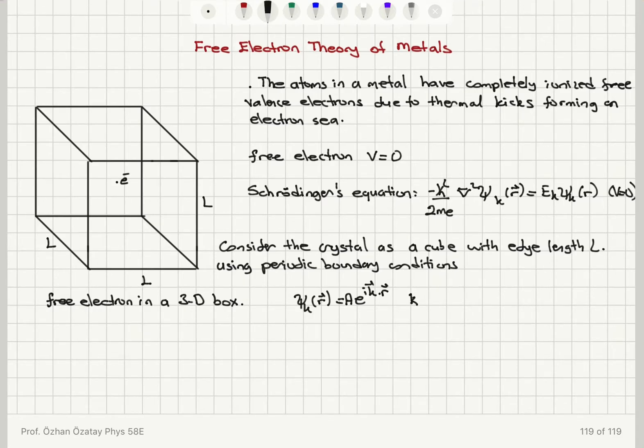Here the wave vector k has components k_x, k_y and k_z given by 2nπ/L where n starts from 1, 2, 3, etc. Because n equals zero would imply an electron with zero energy and that would be violating uncertainty principle.